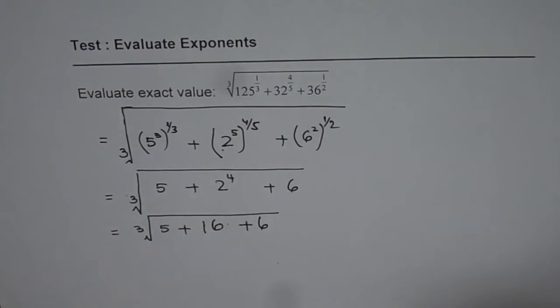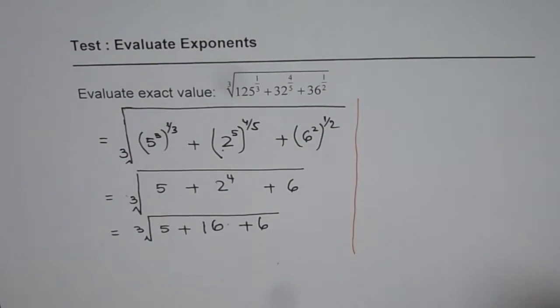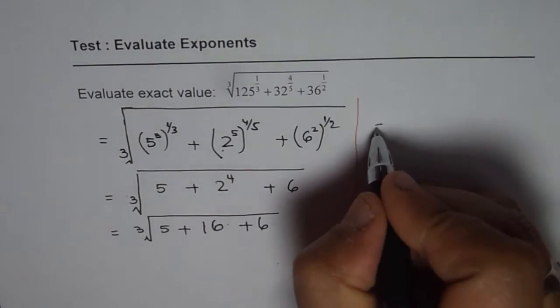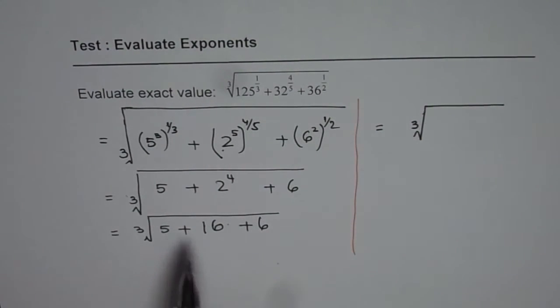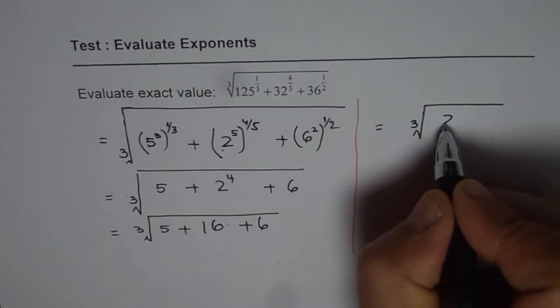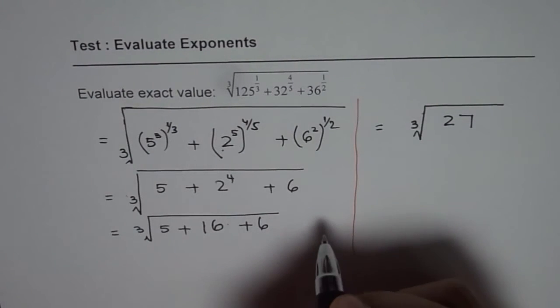Now let me take it to the right side and then rewrite it as equals to cube root of, let's add them all. So 6 plus 6 is 12, rather 22 plus 5 is 27. So we get 27 here, cube root of 27.